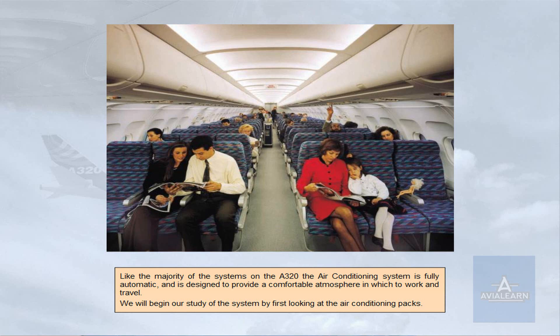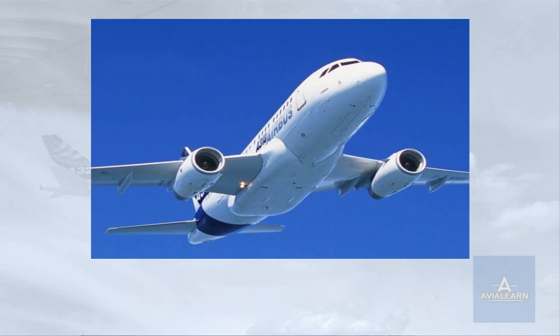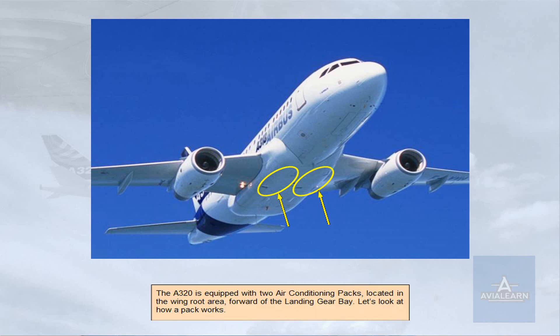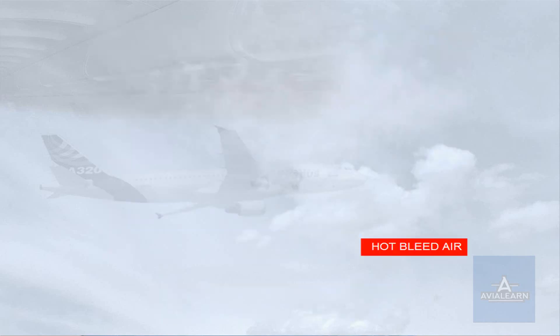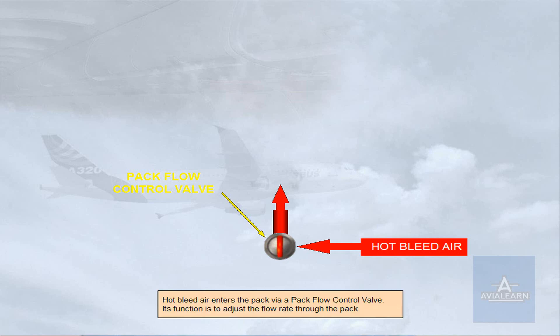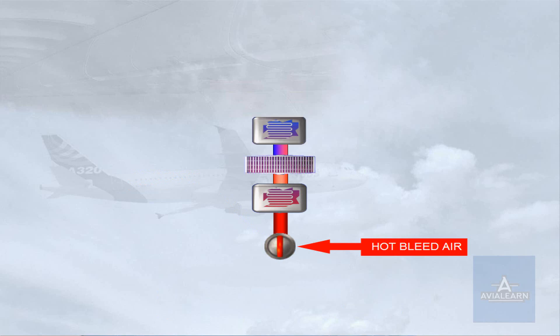We will begin our study of the system by first looking at the air conditioning packs. The A320 is equipped with two air conditioning packs located in the wing root area, forward of the landing gear bay. Let's look at how a pack works. Hot bleed air enters the pack via a pack flow control valve. Its function is to adjust the flow rate through the pack. The air then passes through several stages within the pack that progressively cool the air to provide a conditioned air output.